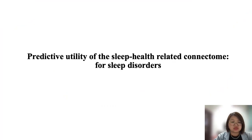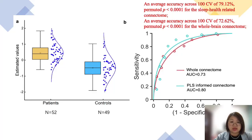Furthermore, we tested the predictive utility of the sleep health-related connectome for sleep disorders — specifically, insomnia disorder. Using classification models, we achieved an average accuracy of almost 80% for the sleep health-related connectome to differentiate healthy sleepers from insomnia disorder patients.